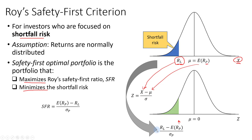Comparing this transformed formula to the Safety First Ratio, the difference is in the numerator. If we express this formula in terms of the Safety First Ratio, it equals the negative of the Safety First Ratio. So the larger Roy's Safety First Ratio is, the larger the negative amount, the further left it moves on the distribution, and the smaller the shortfall risk becomes.